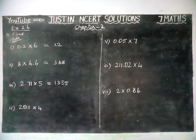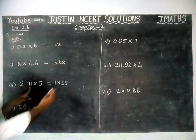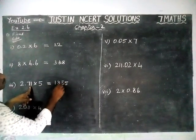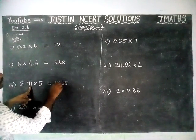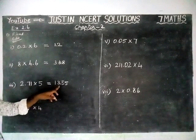So 1355. And here we have two decimal places. So from right hand side, we have to count two decimal places. 1, 2. So after two digits, we have to make decimal point. So now answer is 13.55.